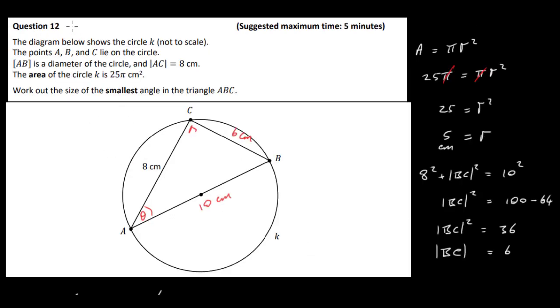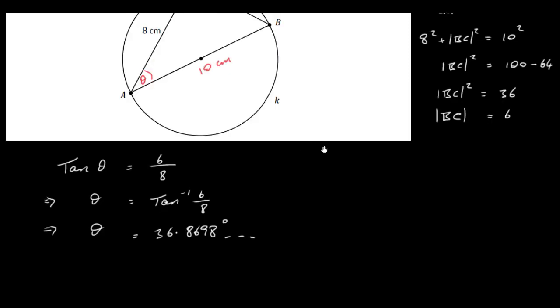So we need to give our answer, work out the size of the smallest angle in the triangle ABC. So it doesn't actually say, which is unusual, that we need to round it. OK, so I'm just going to leave it at that. OK, so my answer then is, so my answer, the angle BAC is equal to 36.86 and so on degrees. This is the smallest angle. OK, so that's it for this question and indeed the junior cert as well.